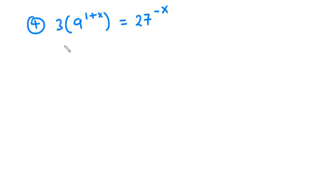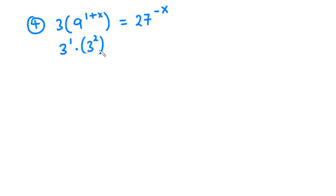Now we can simplify this as 3 exponent 1 times 3 exponent 2 — that is for the 9 — and then we have exponent 1 plus x.